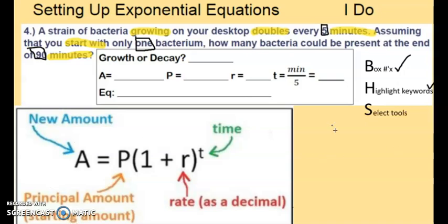So from here we're going to select tools. A tool that we want to do is write out our givens and our unknowns. This is a growth. It says the word grow. A is going to represent your new amount. That's what we're looking for. P is your original amount, your starting amount. It says start with one bacterium. So we're going to put one right here.